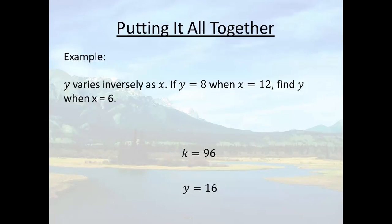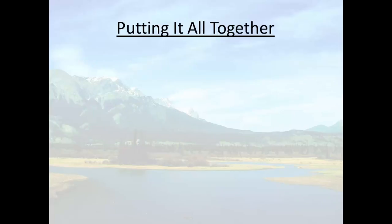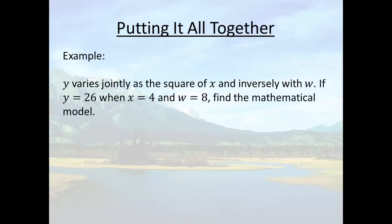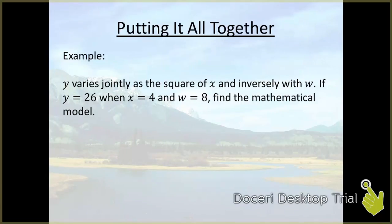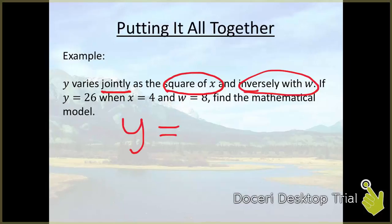Okay now the last thing I want to try, I want to try an example of joint variation. Okay, here we're told y varies jointly as the square of x and inversely with w. Okay so that's saying y varies with both x and w. So the first thing we need to do is come up with the type of model and that would be y equals some constant times the square of x but inversely with w means that w will be down there.